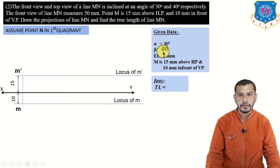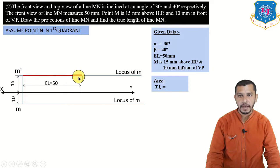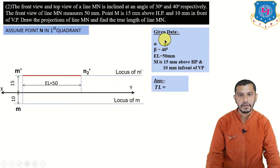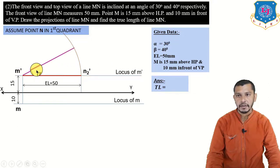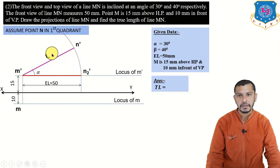Start with elevation length 50 mm: mark it on the locus of M-dash to get N2-dash. Now take center at M-dash, radius equal to M-dash to N2-dash, and draw an arc in the upper direction since N is in the first quadrant. From M-dash, draw a line inclined at alpha which is 30 degrees — the intersection with the arc gives N-dash. M-dash to N-dash is the elevation length of 50 mm. Draw the locus of N-dash to get N1-dash.